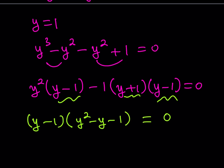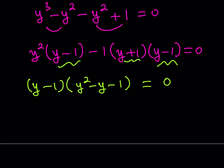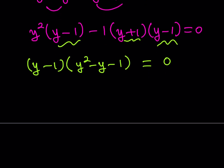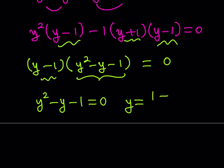This is why we call it a golden trigonometric equation — the golden ratio comes up. The other solutions come from y squared minus y minus 1 equals zero. Applying the quadratic formula gives y equals 1 plus or minus root 5, all over 2. So our three y values are: y equals 1, y equals (1 plus root 5) over 2, and y equals (1 minus root 5) over 2.